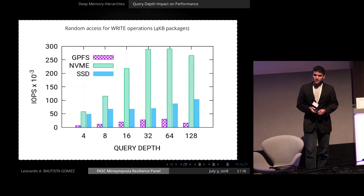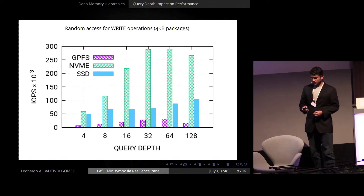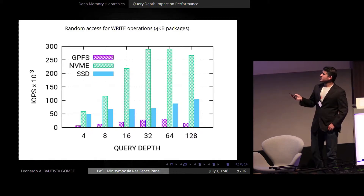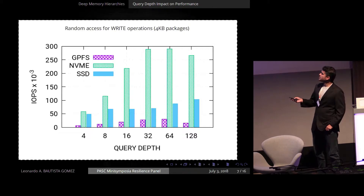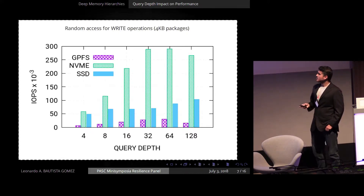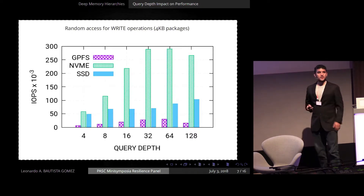We also tested the importance of queue depth — how many processors or concurrent writers are writing to the same device simultaneously. The Y-axis shows I/O operations per second. In blue you have the SSDs, in green the non-volatile memory, and in purple GPFS. From queue depth eight onward, SSDs still improve but less dramatically. For non-volatile memories, using only eight writers gives much lower performance than using 64 writers. So depending on which device you use, the number of simultaneous writers makes a significant difference.